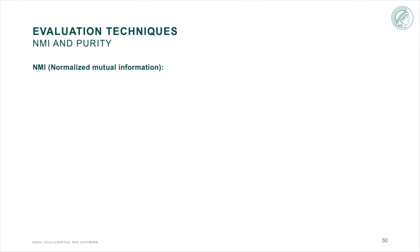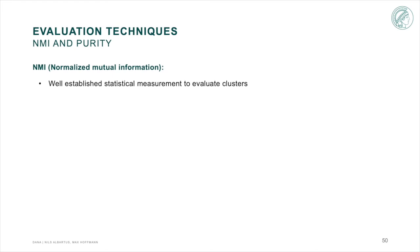To evaluate our findings, we mainly relied on the NMI, a statistical measurement often used in cluster evaluation. The NMI is influenced by several characteristics, including cluster sizes and coverage of the ground-truths. A value closer to 0 means that the clustering is worse off the ground-truths, while an NMI of 1 indicates a perfect result.